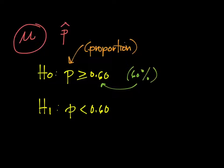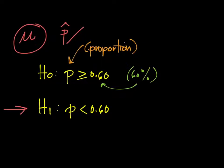As emphasized in the first video, the notations or symbols used in writing the null and alternative hypothesis should be symbols for measures coming from the population, and P-hat is a sample proportion, not a population value. So our null hypothesis is that P, the true population proportion, is at least 60%, meaning greater than or equal to 0.60. Therefore, the alternative hypothesis is the exact reverse — P is less than 0.60, so H1: P < 0.60.